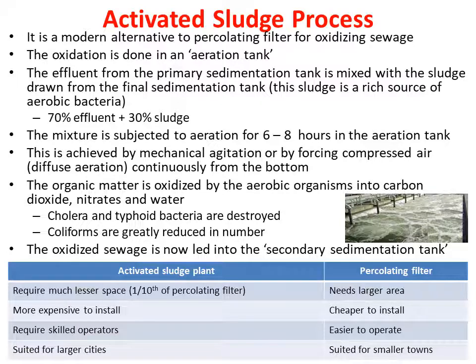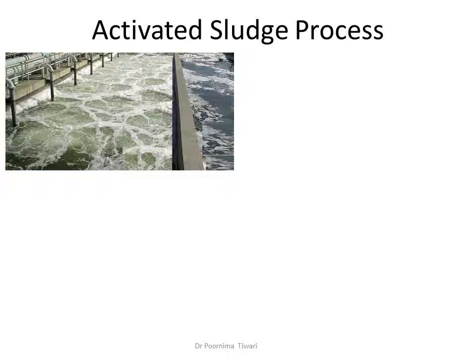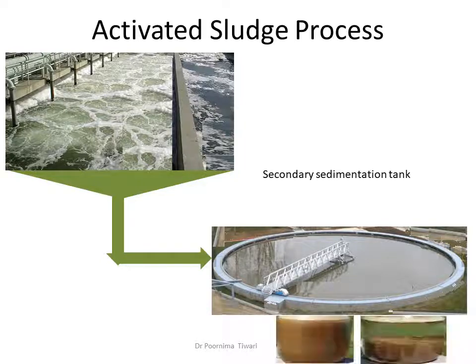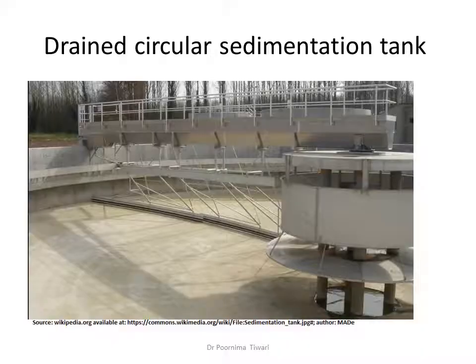Comparing the activated sludge plant with the percolating filter plant: the activated sludge plant requires only one-tenth of the space compared to the percolating filter, but it is more expensive to install and requires more skilled operation. Hence, the activated sludge plant is more suited for larger cities. Pictures show the sewage being agitated in the aeration tank — it appears to be boiling due to diffuse aeration. The fully oxidized sewage is then led into the secondary sedimentation tank where the activated sludge quickly settles, removed by slowly rotating scrapers at the bottom.